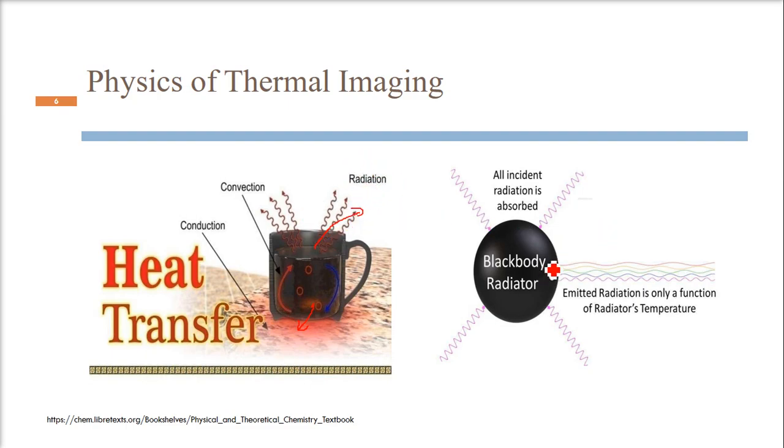We have a concept of black body radiator. This black body radiator is an ideal thing; it doesn't exist. It's an ideal thing. All incident radiation is absorbed in this black body radiator, and the emitted radiation is only a function of the temperature. What is the temperature of this body?